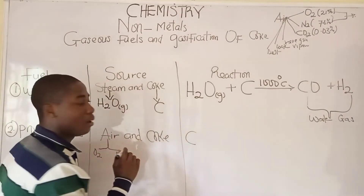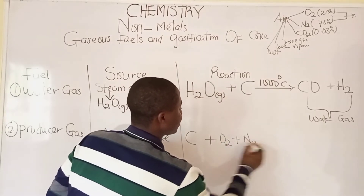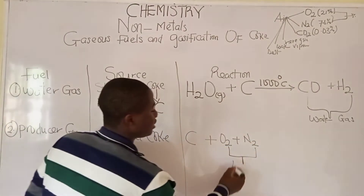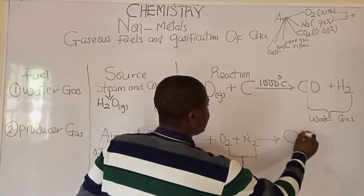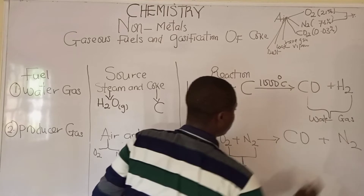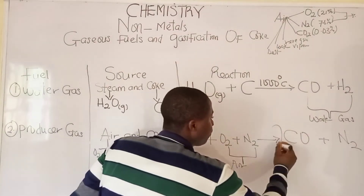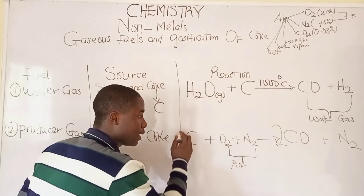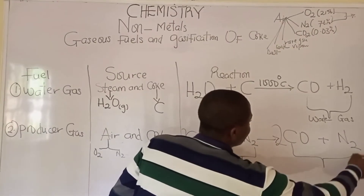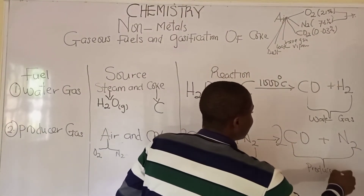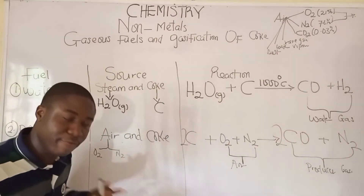The reaction: carbon (coke) reacts with a stream of air (O₂ + N₂). The products are CO + N₂. Balancing the equation — since there are two oxygen atoms — we place 2 moles of CO: C + O₂ + N₂ → 2CO + N₂. This product is called the producer gas.